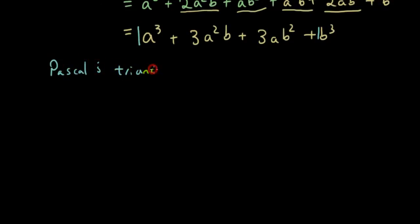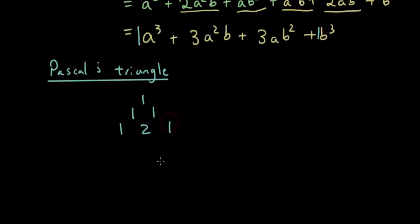If you haven't seen this triangle before, we start off with 1 on the top. Each term comes from the sum of the two terms above it. So 2 comes from 1 plus 1. Then 1 plus 2 is 3, 2 plus 1 is 3, and then 1 again in the last position.